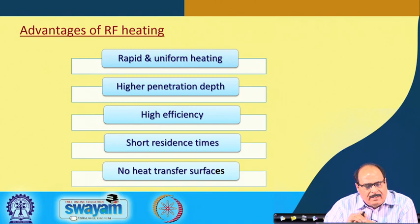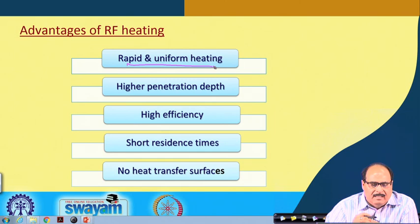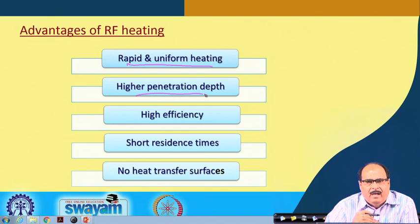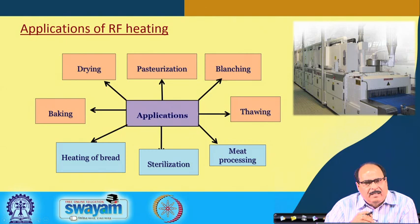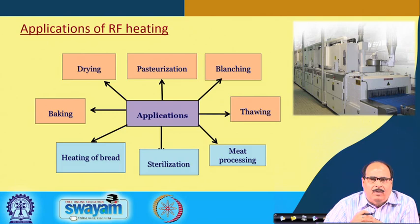RF heating, like microwave heating, has several advantages. It results in rapid and uniform heating. It has higher penetration depth and high efficiency. It results in short residence times and involves no heat transfer surfaces. This generally results in better quality products and more efficient processes. It can be applied extensively in various food processes for preservation purposes, improvement in quality, and improvement in process efficiency.